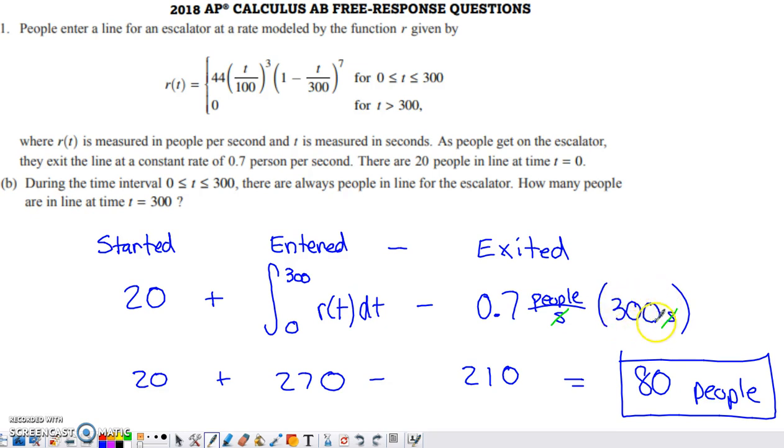It's a 300-second stretch, and people are constantly exiting the line at 0.7 people per second. If you take the product of 0.7 and 300, the seconds cancel. This gives you how many people exited the line from time 0 to time 300, and that's 210 people. When you add those together and subtract that off, you end up with 80 people in the line by time 300.